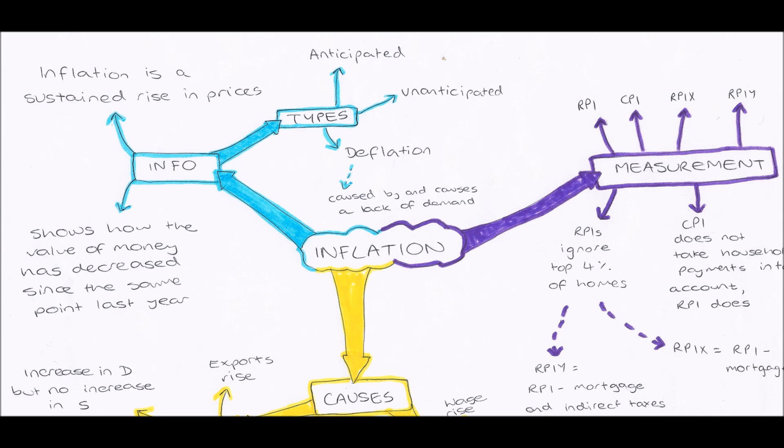What these indexes do is people will look at the prices of all these different goods up and down the country. So say for example bread, they will look at the price of bread at every single place up and down the country, and they will then work out an average for the price of bread.